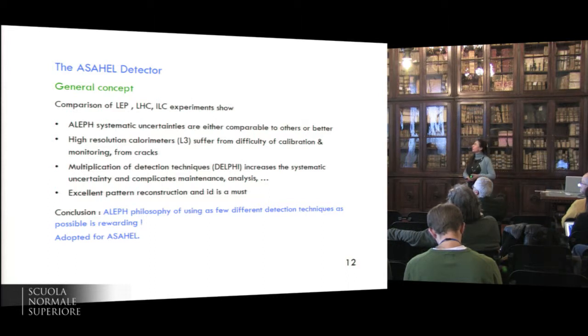What we learned also from this comparison is that ALEF systematic uncertainties are rather comparable to others, or better. The high-resolution calorimeters, like L3 but some others, often suffer from the difficulty of calibration, monitoring, and also sometimes from cracks. And also the multiplication of detection techniques, like in DELPHI, increases the systematic uncertainty, complicates the maintenance, monitoring, the analysis, and also we have seen that excellent pattern recognition and identification is also a must. In conclusion, the ALEF philosophy of using as few different detection techniques as possible is really rewarding. And this is a philosophy that I will adopt for ASAEL.